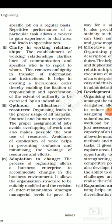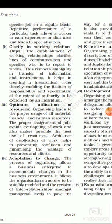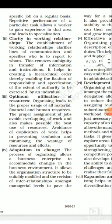Next is clarity in working relationships. The organizing process makes the working relationship — authority, responsibility, and accountability — very clear. Every employee in the organization knows from whom they should receive orders and to whom they are accountable. This clear relationship removes a lot of confusion that might otherwise exist inside the organization when relationships are not defined.